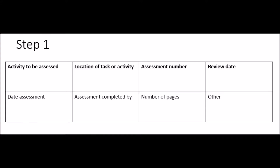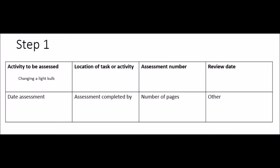Referring to your form, in the first section of the grid it's got the activity to be assessed, and the example we're going to use is changing a light bulb. The date of assessment we're going to use today. The location of task or activity is the training room Fenton, and our assessment number is TR001 2015.